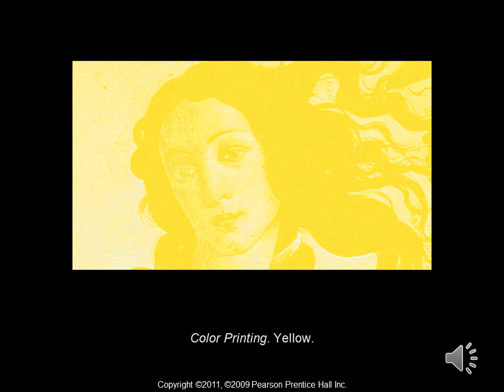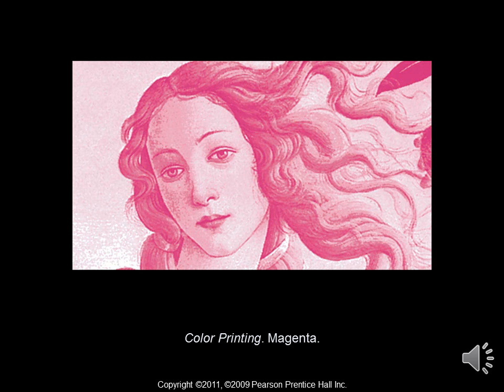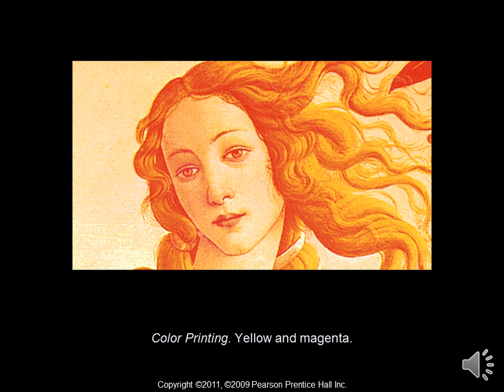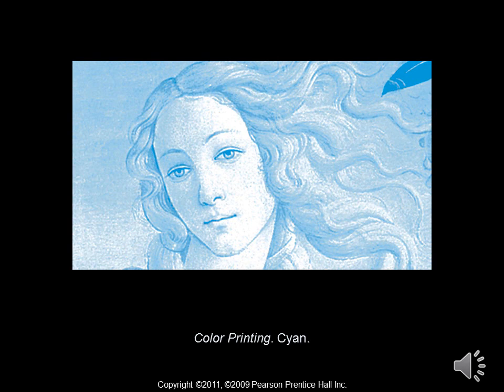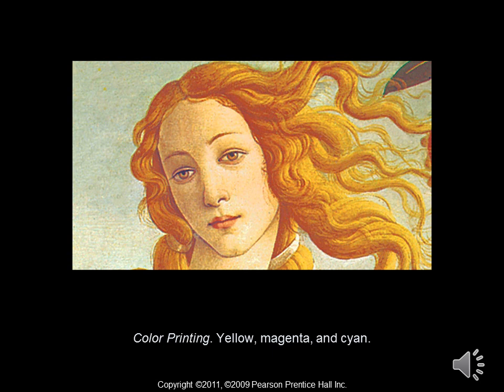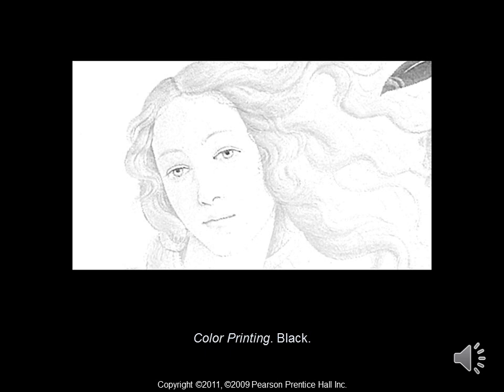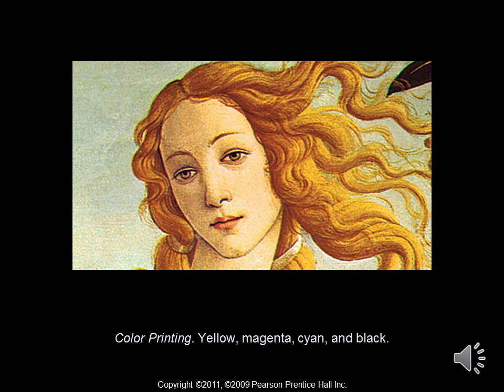These next several slides are examples of what a color print would look like in its separate entities — the yellows, the cyans and blues, magentas, and such. Here is an example of what the yellow would look like, here is our magenta tone, this is yellow and magenta combined, this is cyan, this is yellow, magenta, and cyan combined, and finally our black, which is usually the last color that goes on. And here is a mixture of yellow, magenta, cyan, and black, which is your highest quality printing.